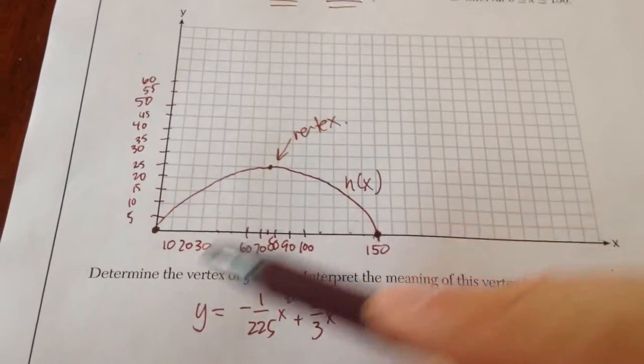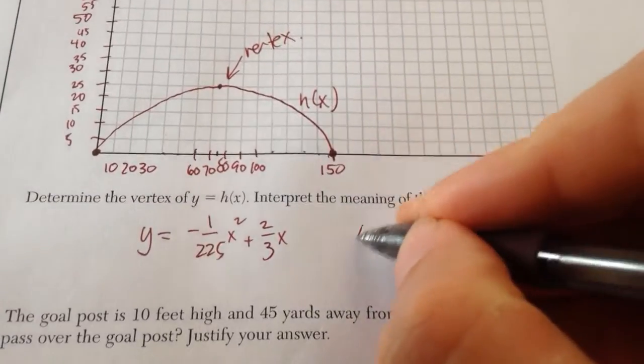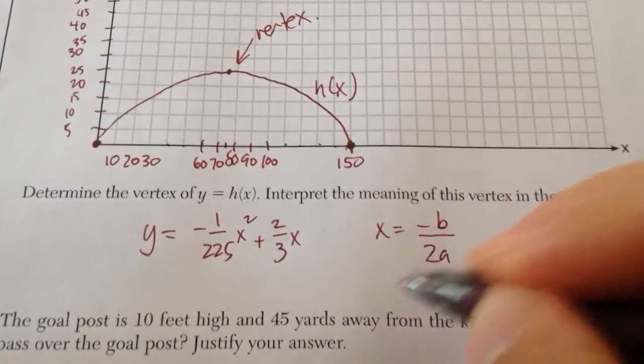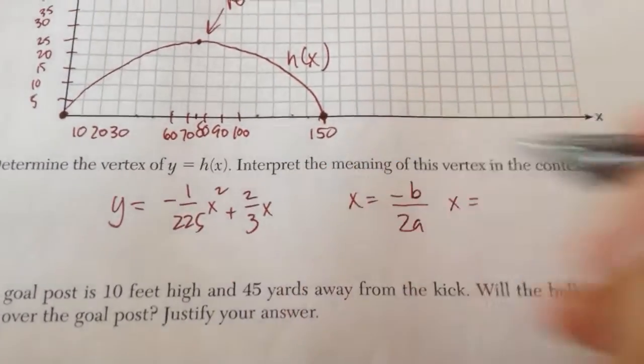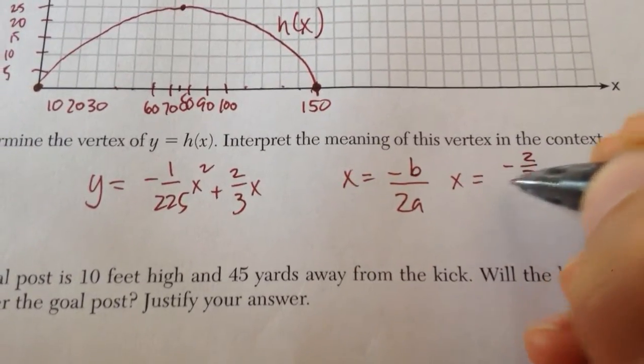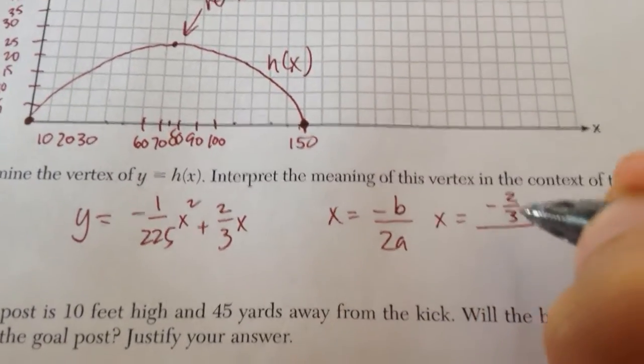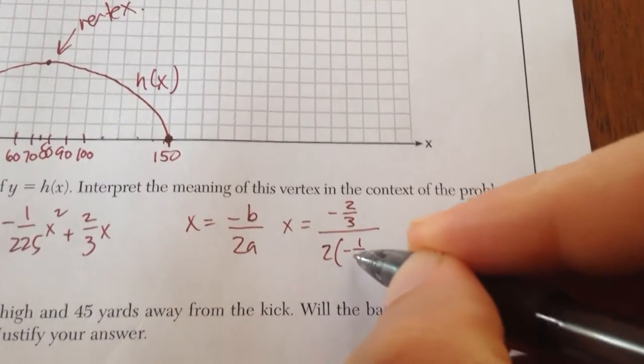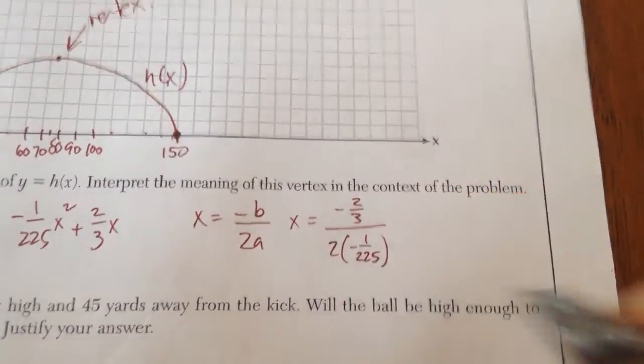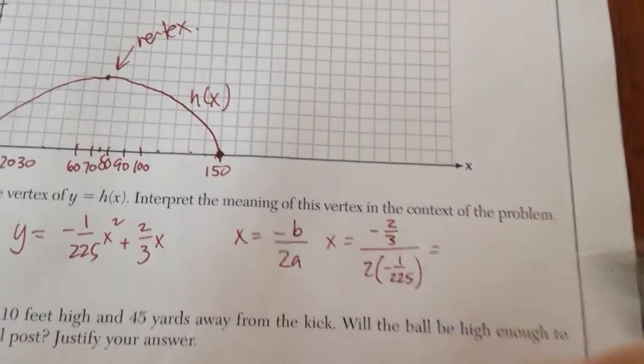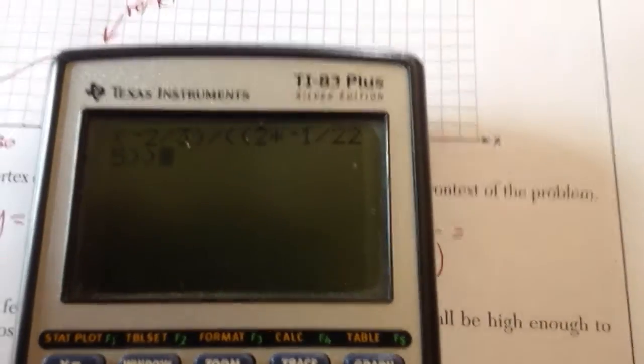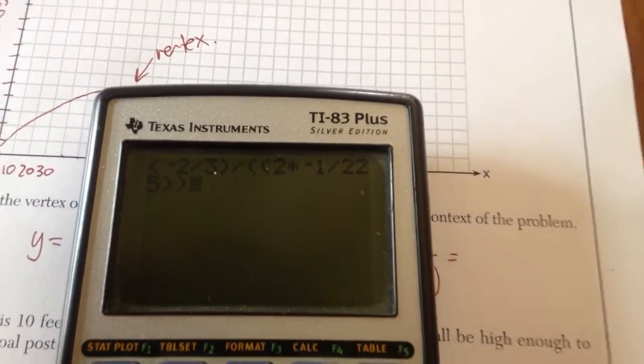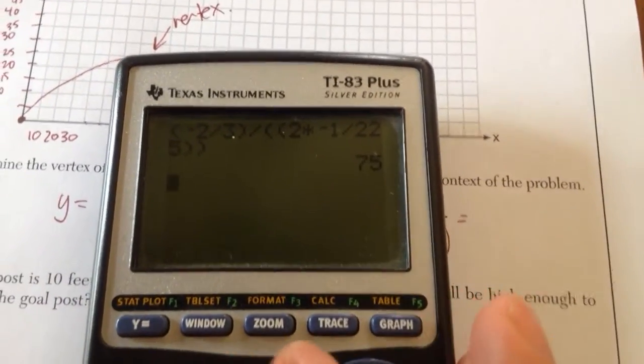Now, the highest point of the parabola is the vertex, but I want to show you how to do it algebraically. You're going to do negative b over 2a. So if negative b is 2 thirds, I say negative 2 thirds. My a value is negative 1 over 225. What I'm going to do is put that into my calculator. I type negative 2 thirds divided by 2 times negative 1 over 225, and I get 75.